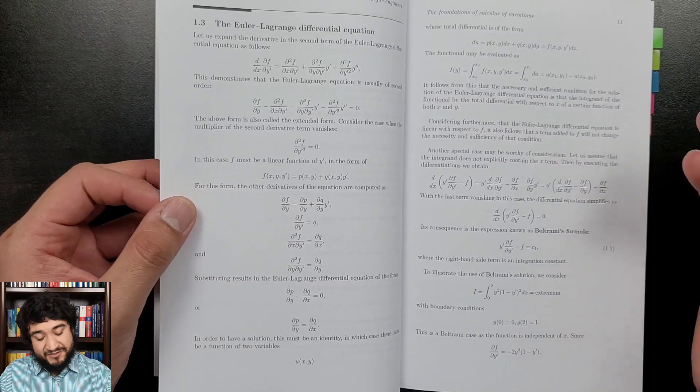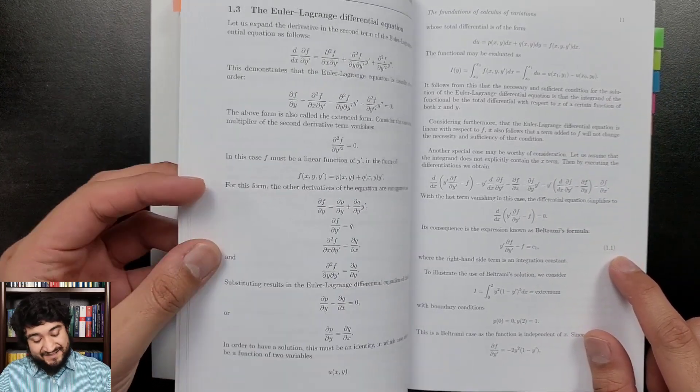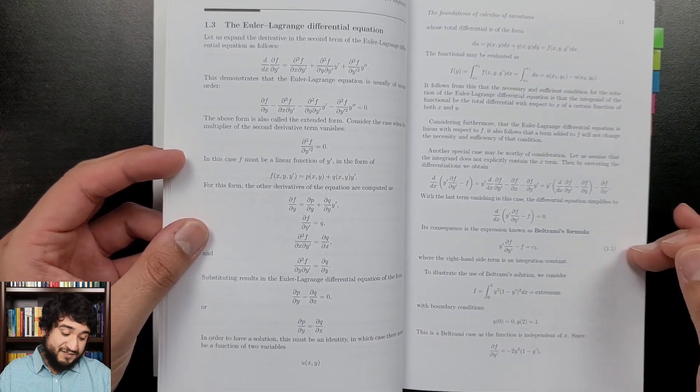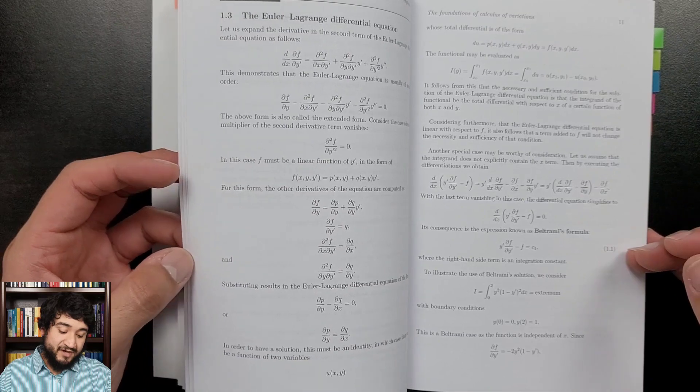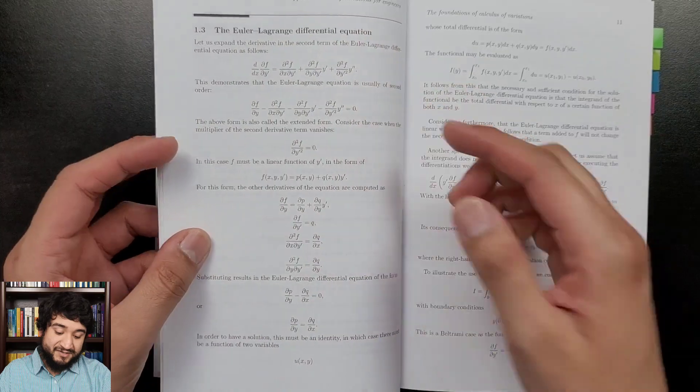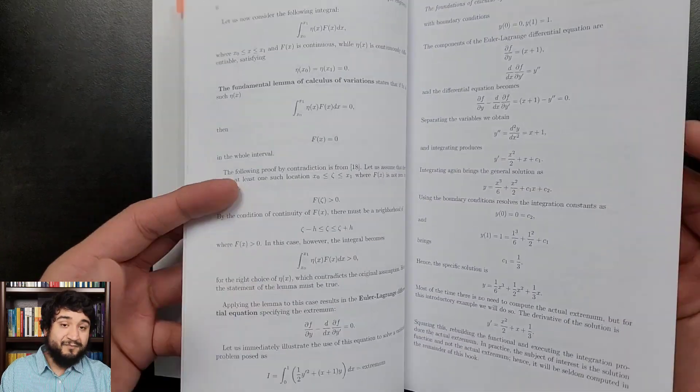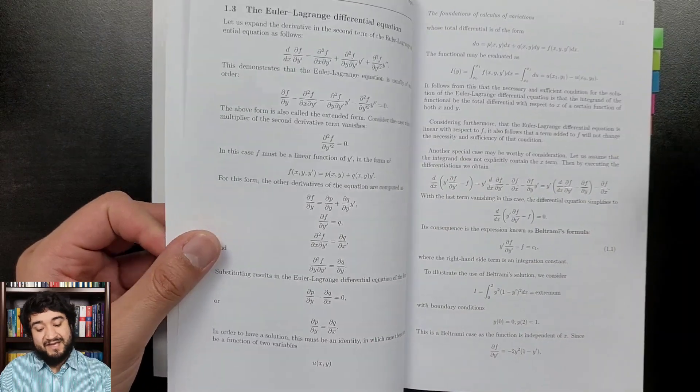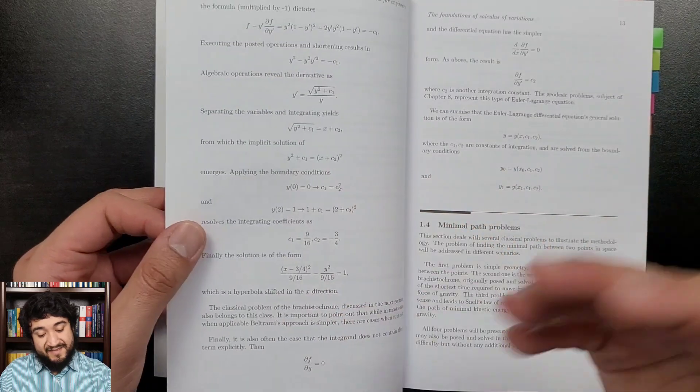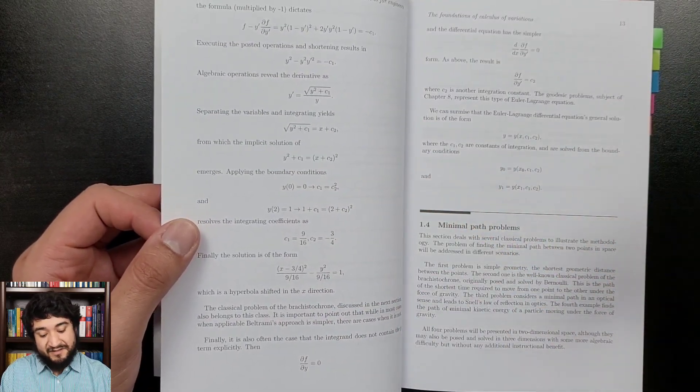One thing that very much irritated me when reading the book—look at this. We're on, I don't know what page, like eight or nine exactly, and this is the first numbered equation that we've got here on Beltrami's formula. He references the Euler-Lagrange differential equation and he did not bother to number it. This is just something that irritated me when I was reading the book and taking notes. It's not that big of a deal, but that's one of the little things that make it feel lazy.